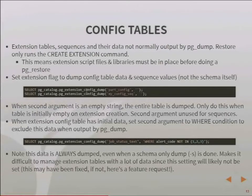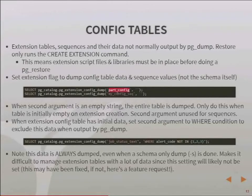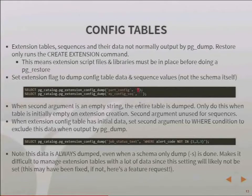For config tables — PG Partman has a config table to say what all the partition sets are — it won't dump out that config data. So if you restore a backup, all your PG Partman configuration is lost. There's a flag you can set in the catalogs called pg_extension_config_dump. You give it the name of the table, and it tells pg_dump to dump that data out. It doesn't dump the object definition — just the data. If you want all of the config data every time, leave the second parameter blank and it'll dump all the data out of the config table every time.